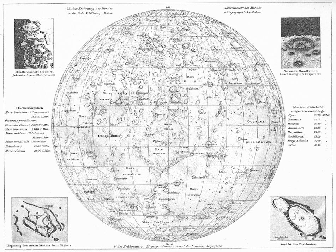Planetary nomenclature, like terrestrial nomenclature, is a system of uniquely identifying features on the surface of a planet or natural satellite so that the features can be easily located, described, and discussed.